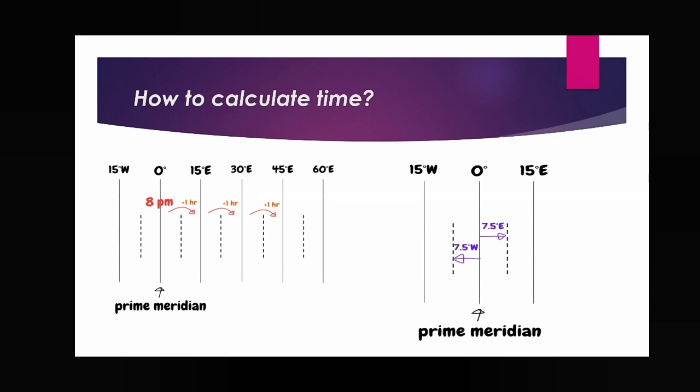Also calculate: what is the time at 7.5 degrees east — that is half of 15 degrees — and at 7.5 degrees west? Calculate the time and tell me.